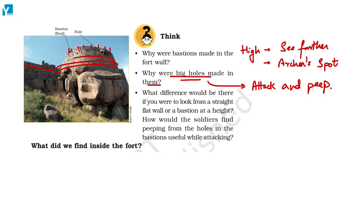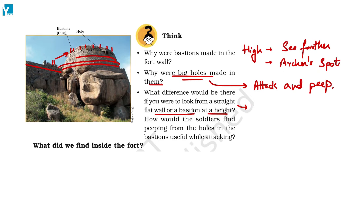What difference would there be if you looked from a straight flat wall compared to a bastion at height? If you look from a straight flat wall versus a bastion, you would see nothing from the flat wall — you can't see over it. That's the important part.